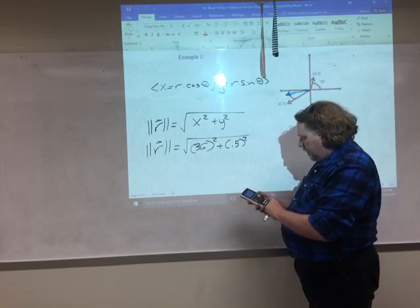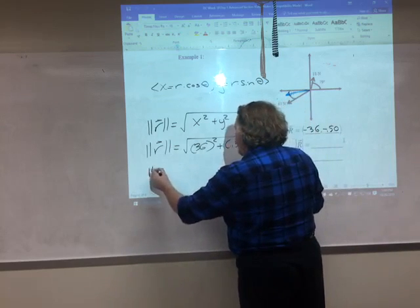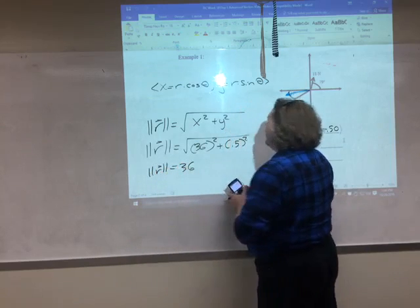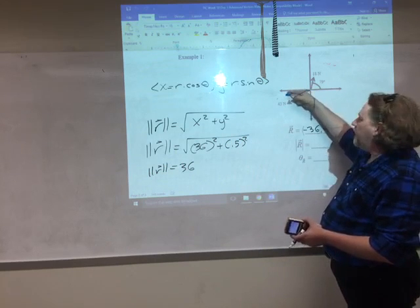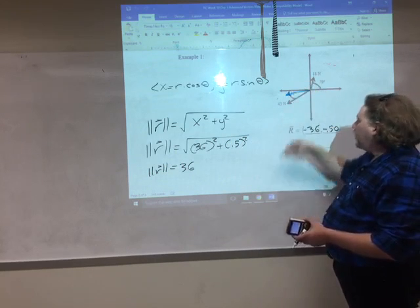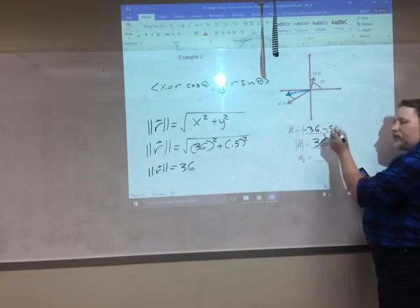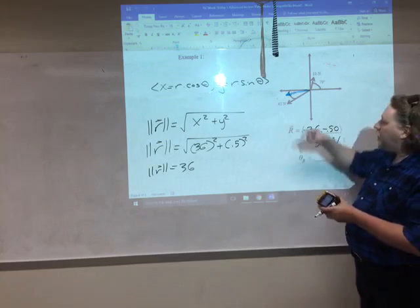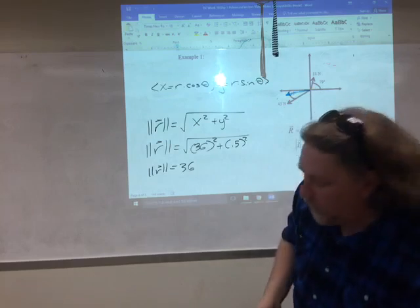Square root 36 squared plus 0.5 squared gives me that the magnitude here is basically 36. That's not too surprising because this thing is almost 100% going to the left, just slightly down. So that little bit of down just isn't adding much to the conversation. 36 units, newtons of force. Now the last thing I'm wondering is, what is this little tiny angle right here? So the formula for that,